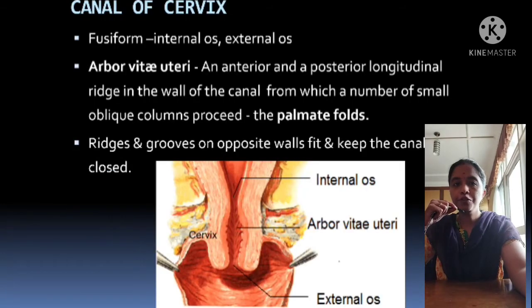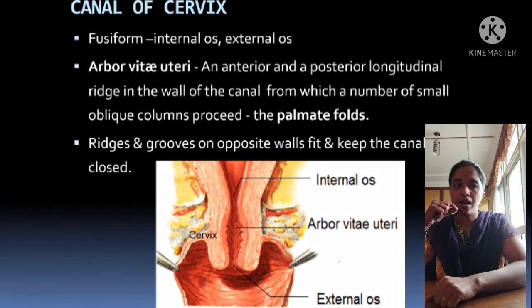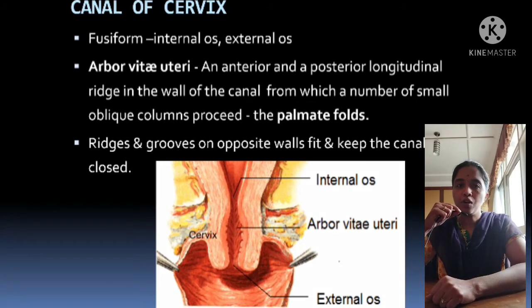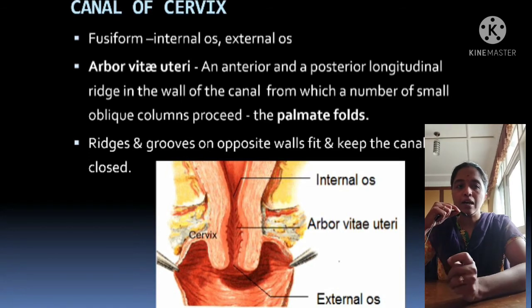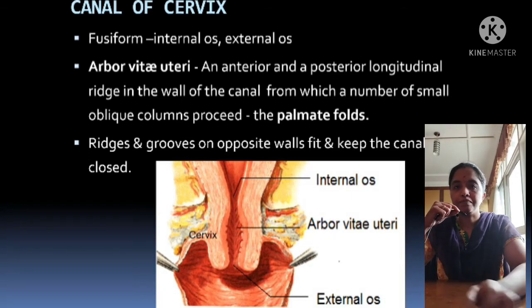The canal of the cervix is fusiform in shape. It extends from the internal os to the external os. The mucosal folds are called arbor vitae uteri. They form an anterior and posterior longitudinal ridge in the wall of the canal, from which a number of oblique columns proceed. They are called palmate folds. Ridges and grooves on the opposite walls fit and keep the canal closed.